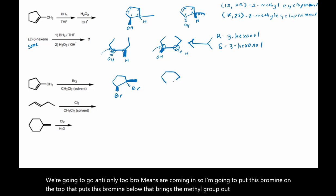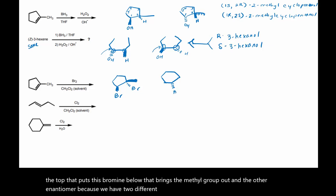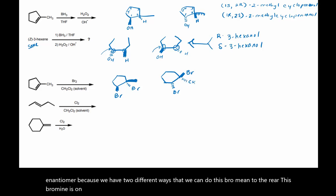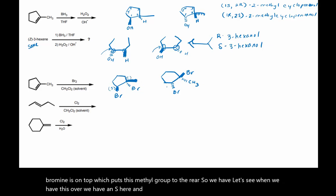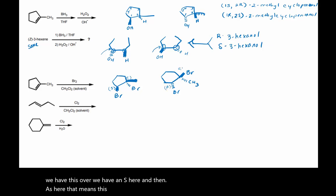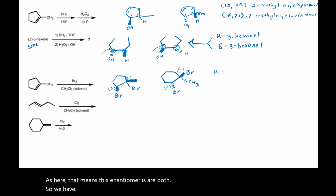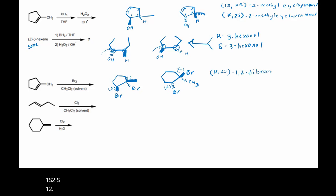And the other enantiomer — because we have two different ways that we can do this — bromine to the rear. This bromine is on top, which puts this methyl group to the rear. When we look at this over, we have an S here and an S here. That means this enantiomer is R on both. So we have 1S,2S-1,2-dibromo-2-methylcyclopentane.